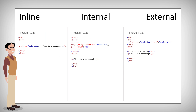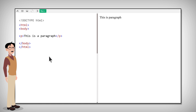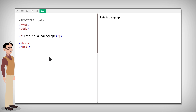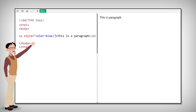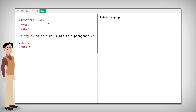Let's take a look at the three options in action. Inline CSS is used to apply a unique style to a single HTML element. This is done by using the style attribute of an HTML element just like this. Here we set the text to blue.